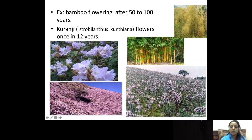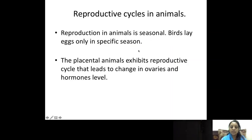Bamboo, after planting, does not develop the shoot system immediately — it first develops the root system, and then all of a sudden the shoot system shoots up. Their flowering takes place after 50 to 100 years. Coming to animals, there are two types of reproductive cycles. For example, birds will lay eggs only in a specific season. Placental animals exhibit reproductive cycles that lead to changes in the ovaries as well as hormonal levels.